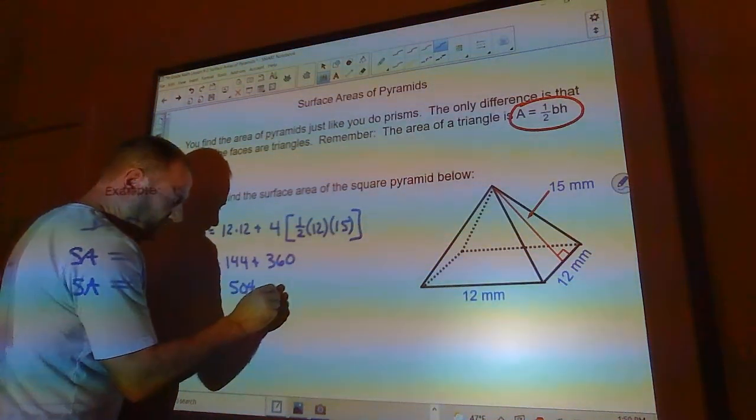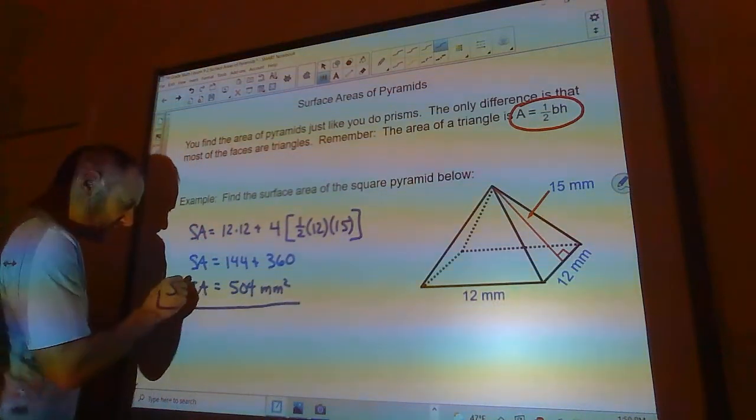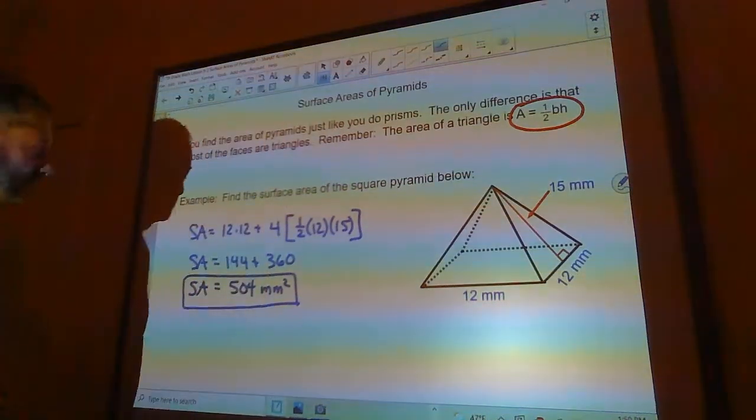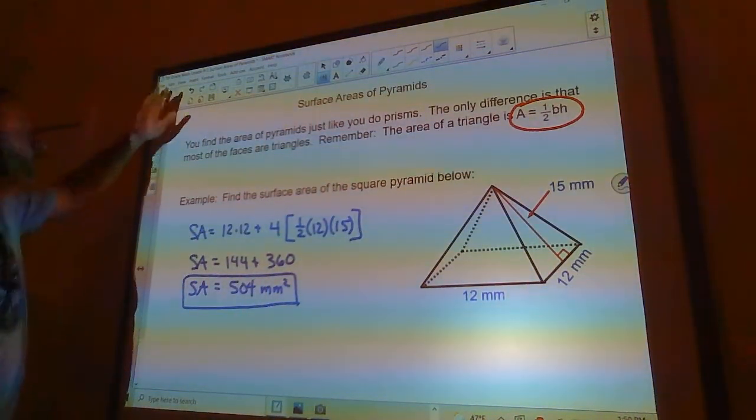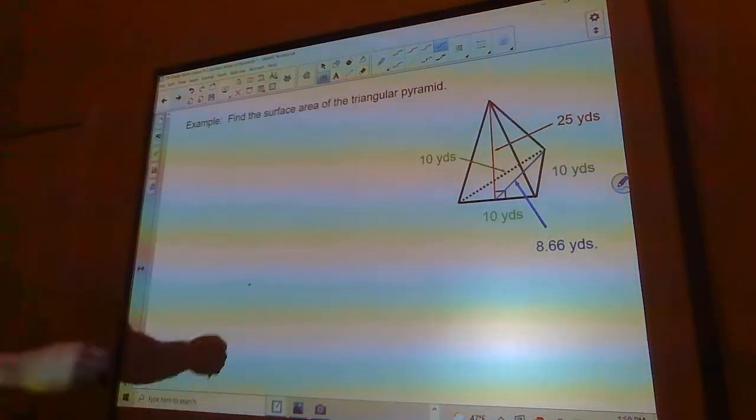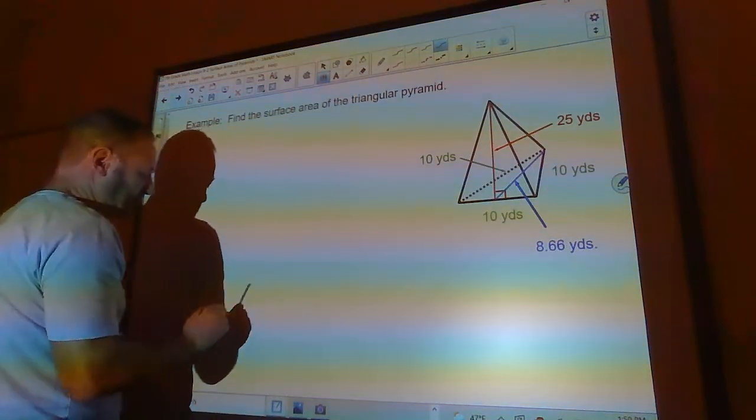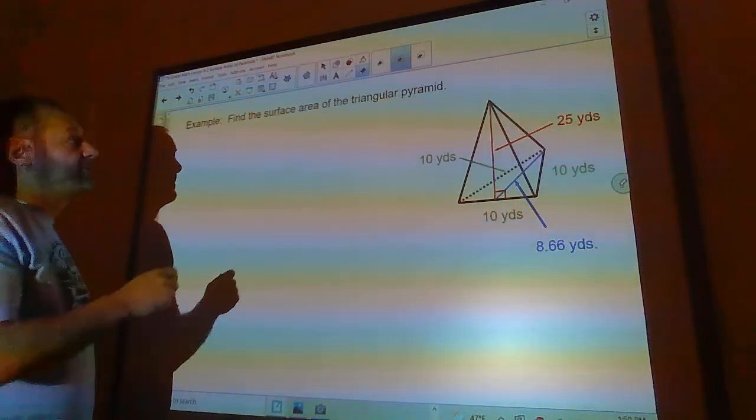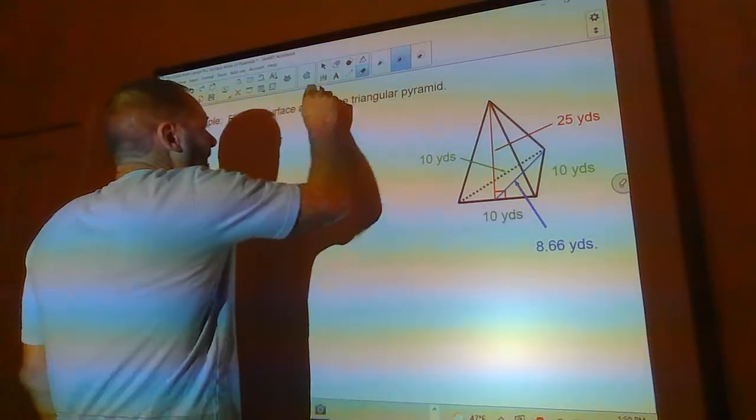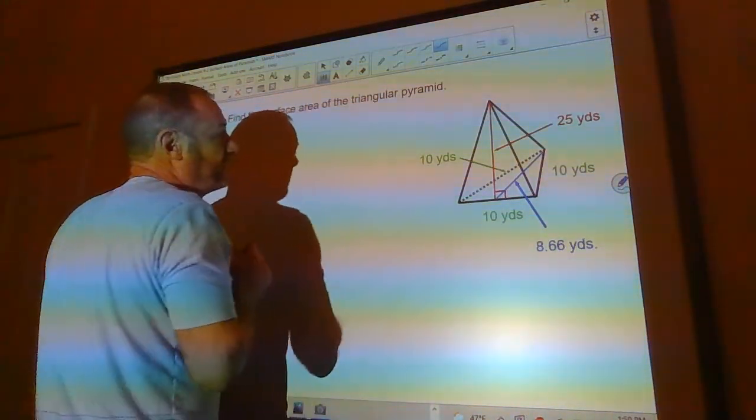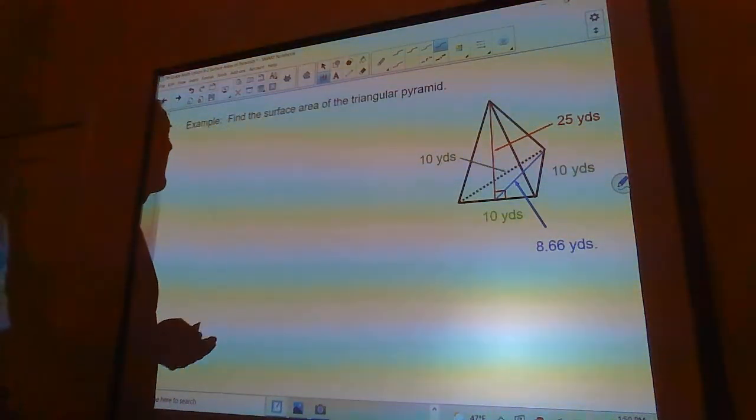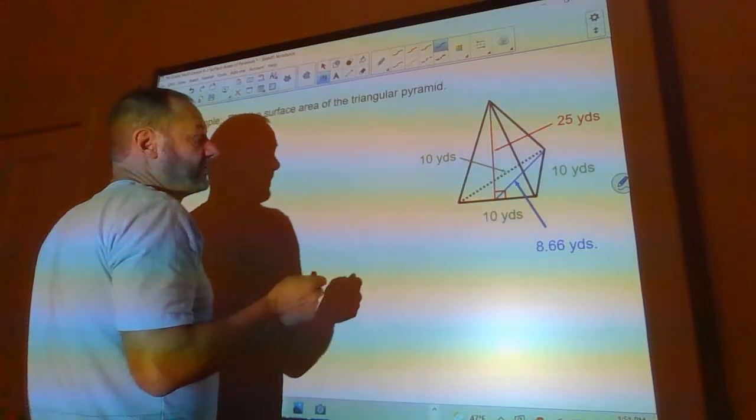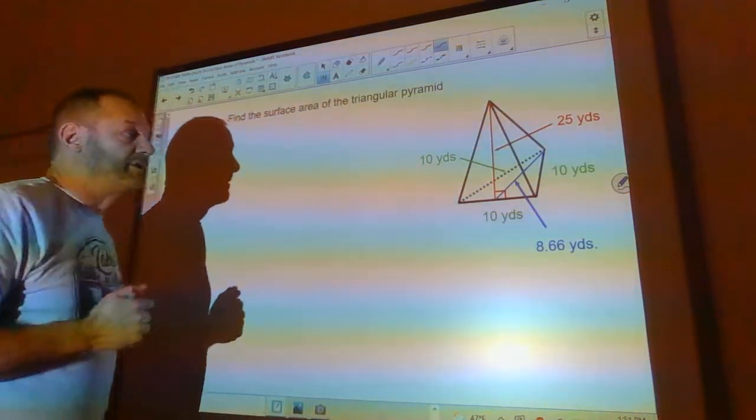So piece of cake, pyramids are not very difficult. What about this one? This is a triangular pyramid, so the base is a triangle. Now it's not to be confused with the tetrahedron where all the faces are exactly identical. In this one, the base triangle is different than the side triangles.